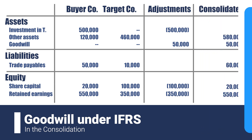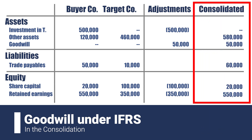This balance sheet you are seeing represents the consolidated statement of financial position of the buyer as at the date of acquisition. According to the standard, this goodwill is tested for impairment annually and is never amortized. The complete opposite of goodwill under IFRS is called the gain on bargain purchase, which arises when the consideration paid is less than the fair value of the identifiable net assets of the acquired subsidiary, and it will be discussed in a future video.